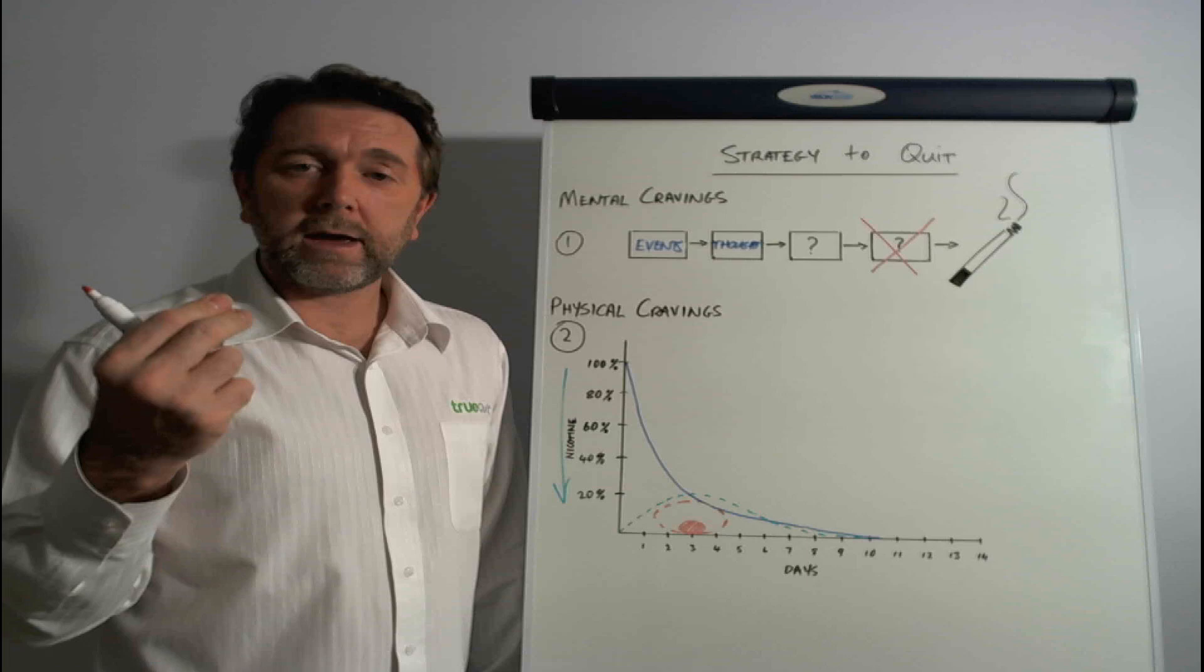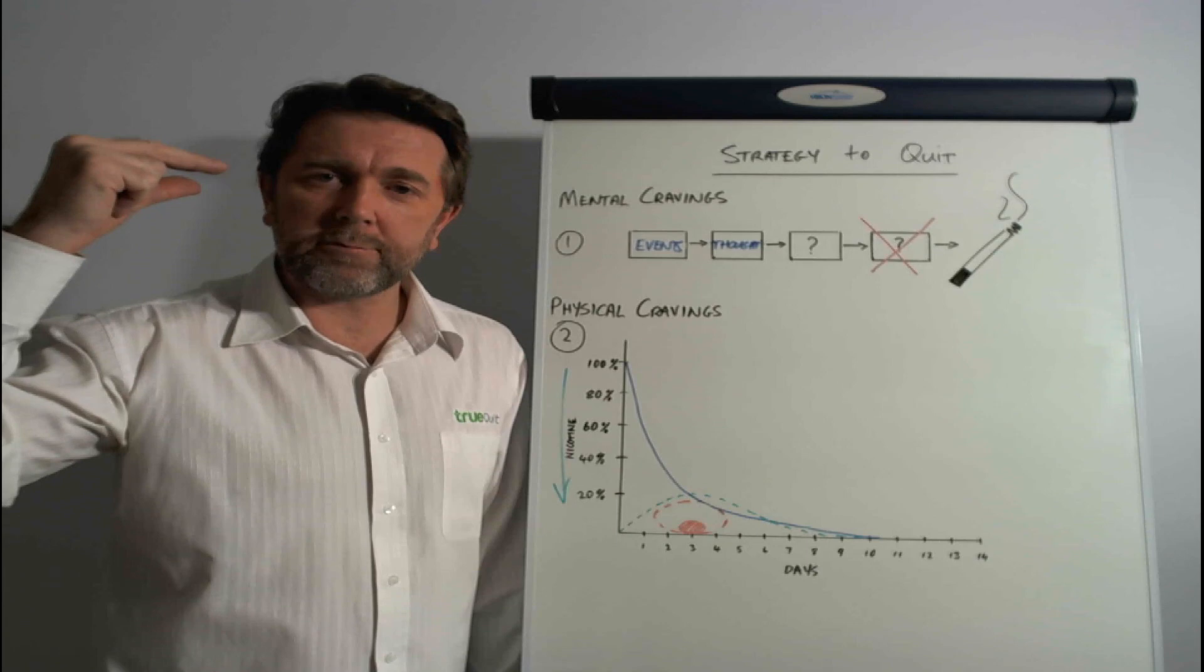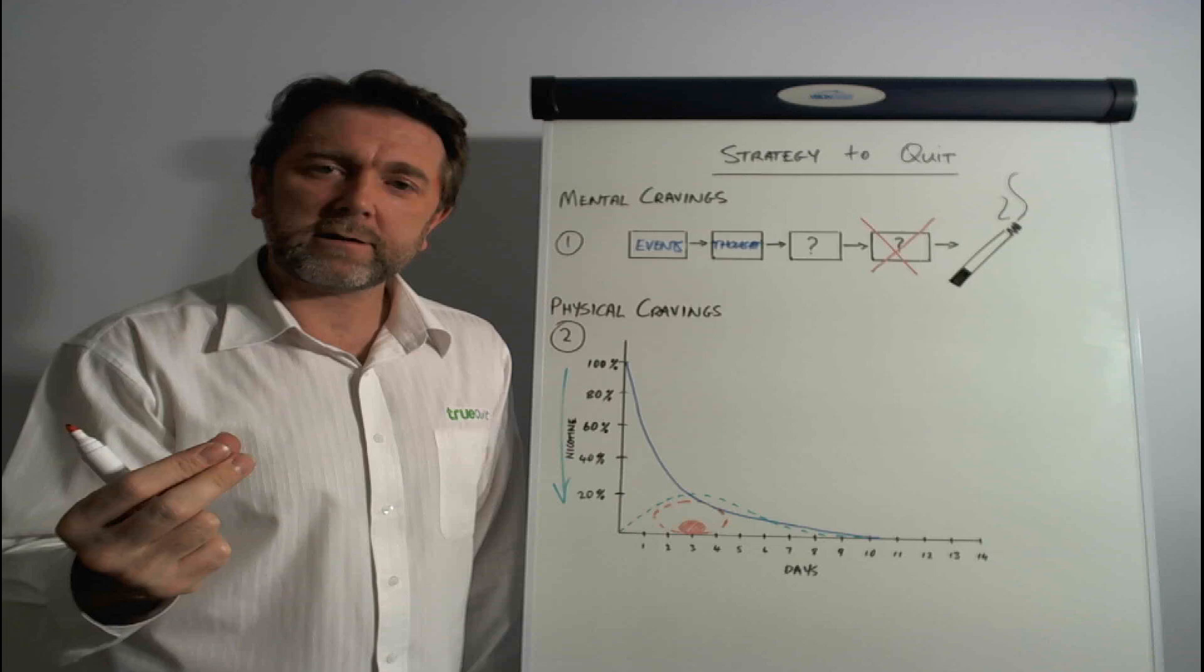But essentially, what we do here is we teach you what a mental craving actually is. Now, a smoker assumes that a mental craving is one thing, but in actual fact, it's something different. It's like something has been disabled in the brain of a smoker, and we explain what that is.